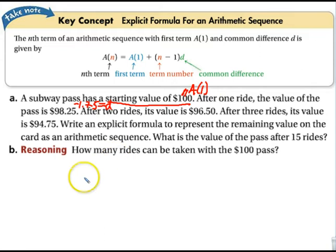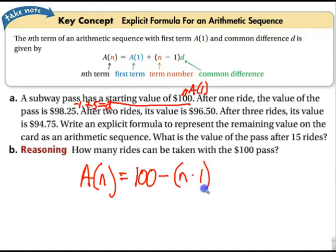So we're going to plug them in. So we have a of n is equal to 100. Now, the value is getting smaller. So the part that's going to change is that right there. So we're going to have n minus 1 times negative 1.75. So we've got, that is our explicit formula. The beginning value, in this case, we're taking away the amount of money we're spending on the subway. So here's d times n minus 1.